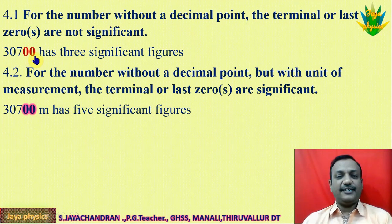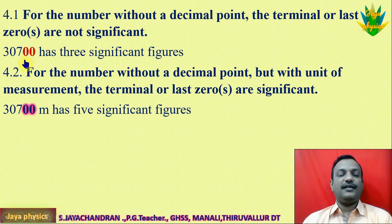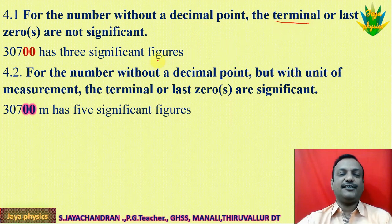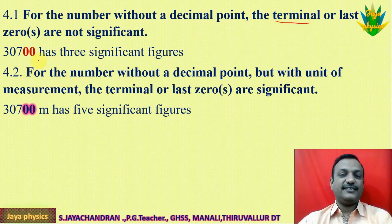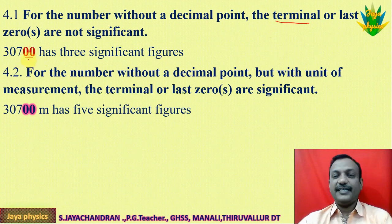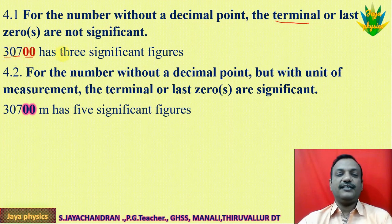This is a complicated case. If the number is greater than one and there is no decimal point, then the trailing zeroes — the last zeroes or terminal zeroes — are meaningless. They are not significant. For example, 307 — how many digits are meaningful? 1, 2, 3. Significant figure is 3.